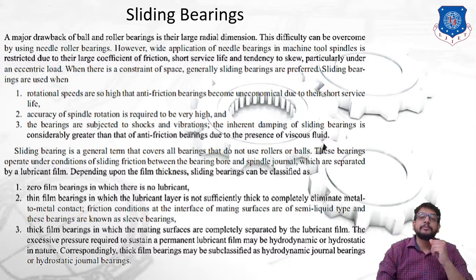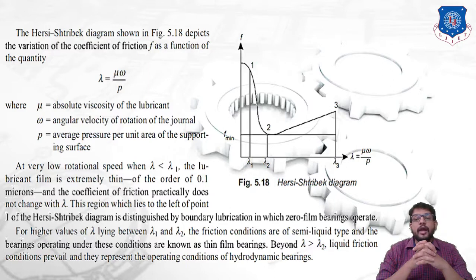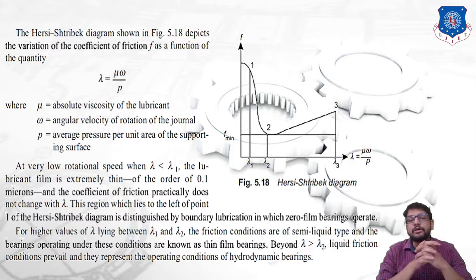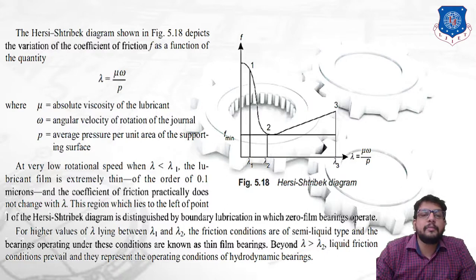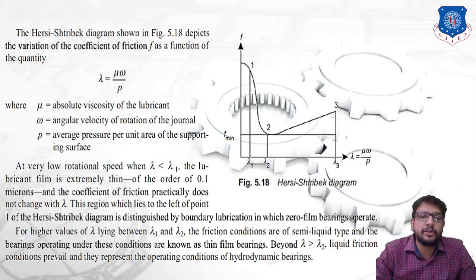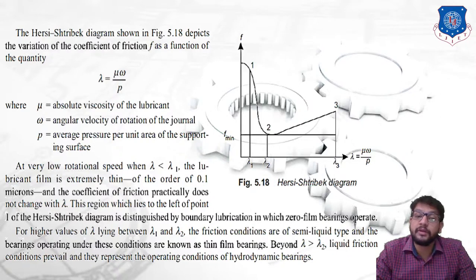As you can see on your screen, there is a graph of f versus lambda, where lambda equals μω/p. This graph is called the Hersey-Stribeck diagram, which depicts the variation of the coefficient of friction f as a function of lambda. Here, μ is the absolute viscosity of the lubricant, ω is the angular velocity of rotation of the journal, and p is the average pressure per unit area of the supporting surface.